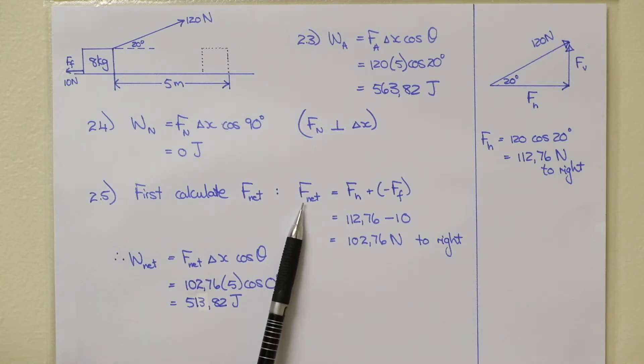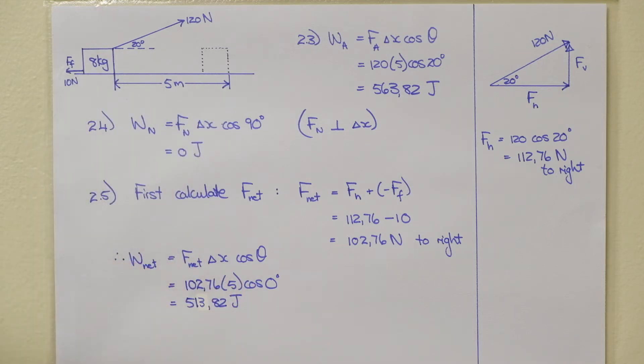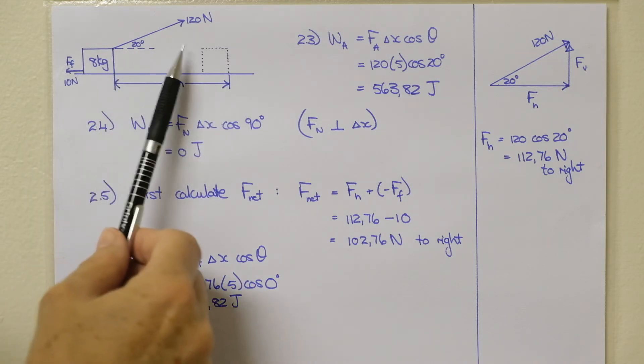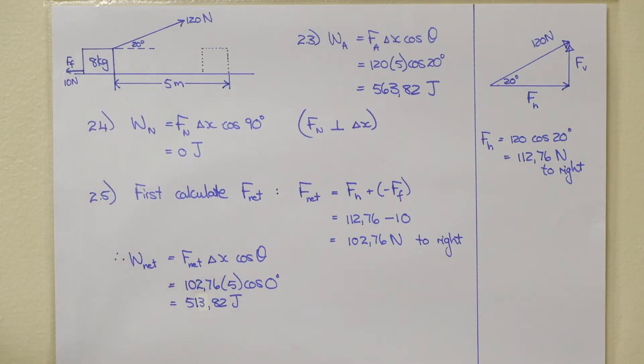F net is the net force of the horizontal forces acting on the box. We have a vertical component here. We have the normal and we have a gravitational force. But they are not doing work on the box. So I'm only working with the two horizontal forces.